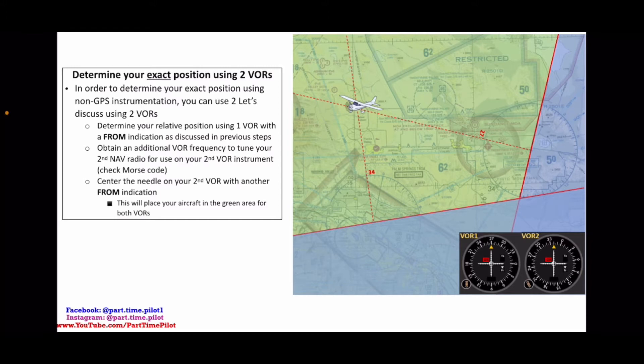Once you have that set up, you're going to use your second nav radio and your second VOR. And you're going to do the same thing. You're going to center the needle on your second VOR with another from indication. This will place your aircraft in the green area for both VORs.